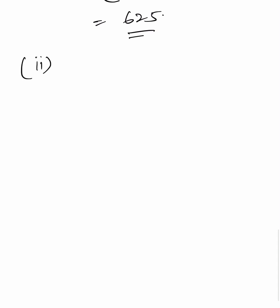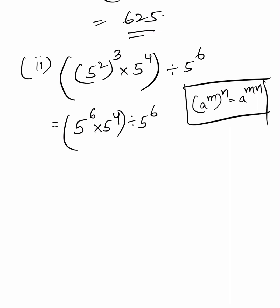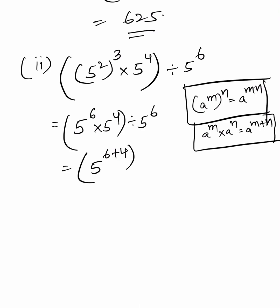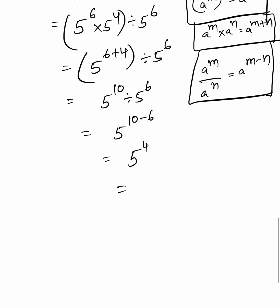Second part: 5 square whole cube, into 5 power 4, divided by 5 power 6. Using a power m whole to the power n equals a power mn, it is 5 to the power of 6 into 5 to the power of 4, divided by 5 to the power of 6. Using a power m into a power n equals a power m plus n: 5 power 6 plus 4, divided by 5 power 6, equals 5 power 10 divided by 5 power 6. Using a power m by a power n equals a power m minus n: that is 5 power 10 minus 6, equals 5 power 4, equals 625.